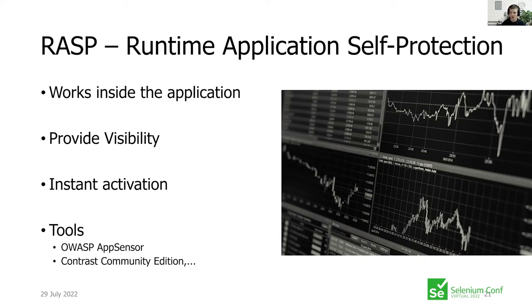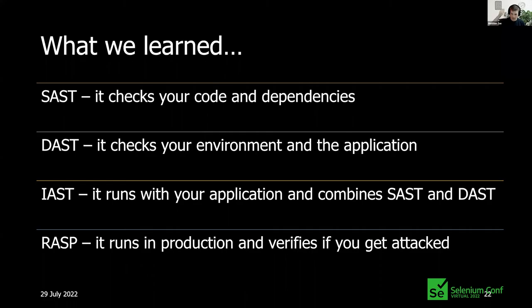To summarize the four approaches: SAST is white-box — it checks your code and dependencies. DAST is black-box — it checks your running environment and application. IAST combines SAST and DAST, as shown in the example. RASP runs in production and protects it — it verifies if you're being attacked.